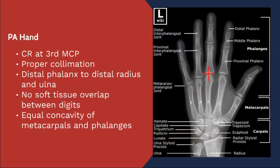When looking at the PA hand x-ray, one of the most central things to consider is where the central ray enters the anatomy — and that's at the third MCP, the third metacarpophalangeal joint. If the central ray is entering at the third metacarpophalangeal joint, you are good to go. It's helpful to have memorized the anatomy here, and we'll talk about mnemonics for the wrist bones as well.